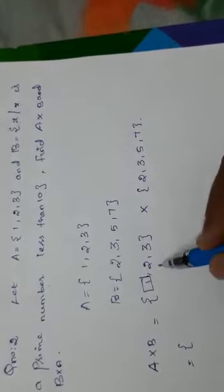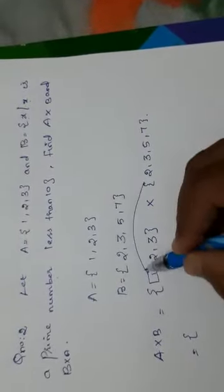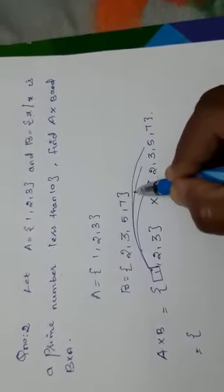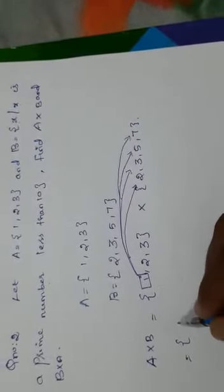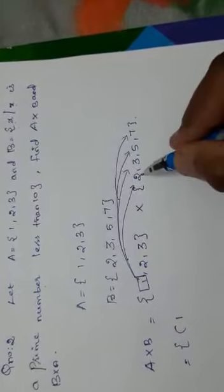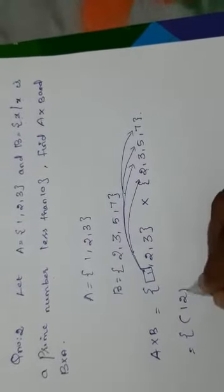First, we will take this first element and we will write the ordered pair with the elements from B. First, we will take 1. We have to pair it with 2. So, 1 comma 2.